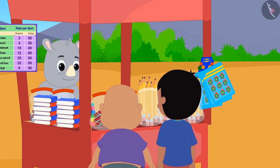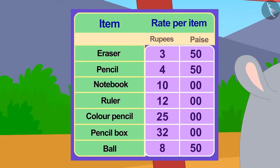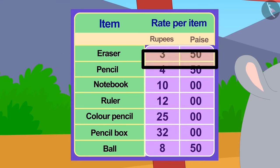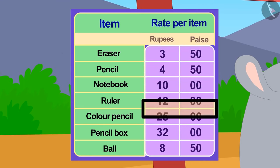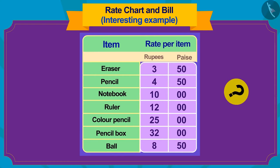A board is installed on Gaggu's shop on which the prices of goods are written. Children, do you remember what we call such a board? Absolutely right — a rate chart!